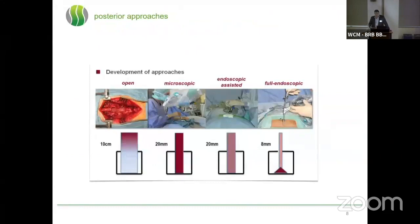In terms of approaches, we saw that the microscope has a coaxial light beam, and the endoscope has an advantage over that because it stays focused at about three to five centimeters from the tip of the scope. It has steady irrigation, and it gives you the possibility to look around corners even without a large approach.